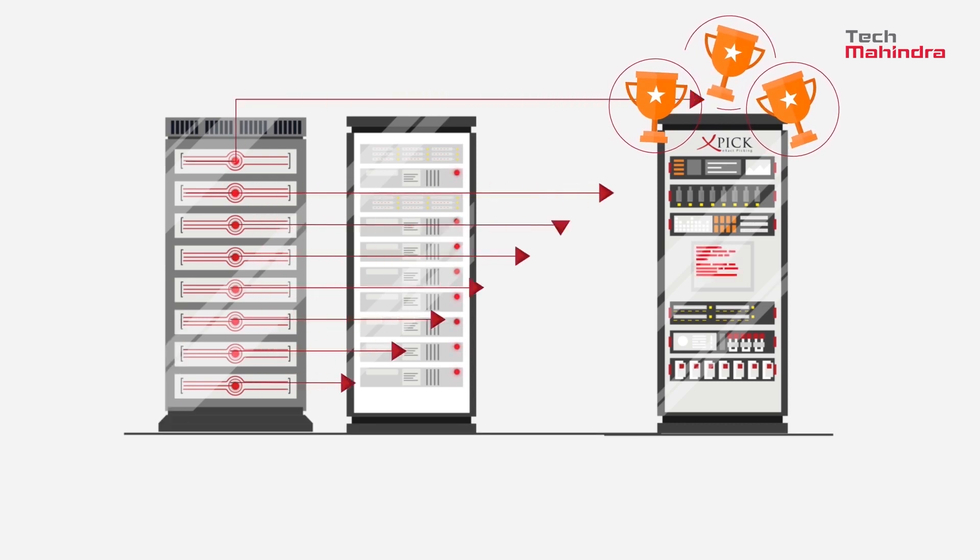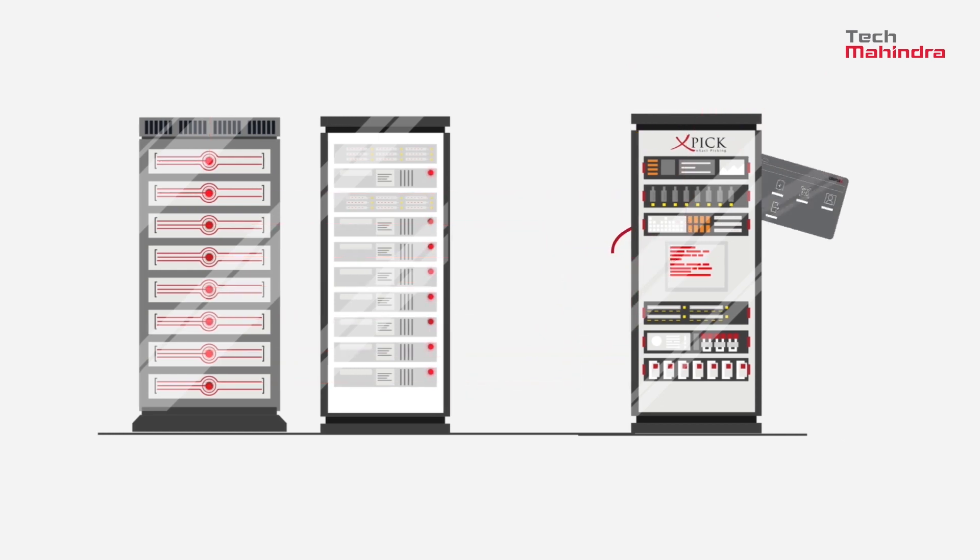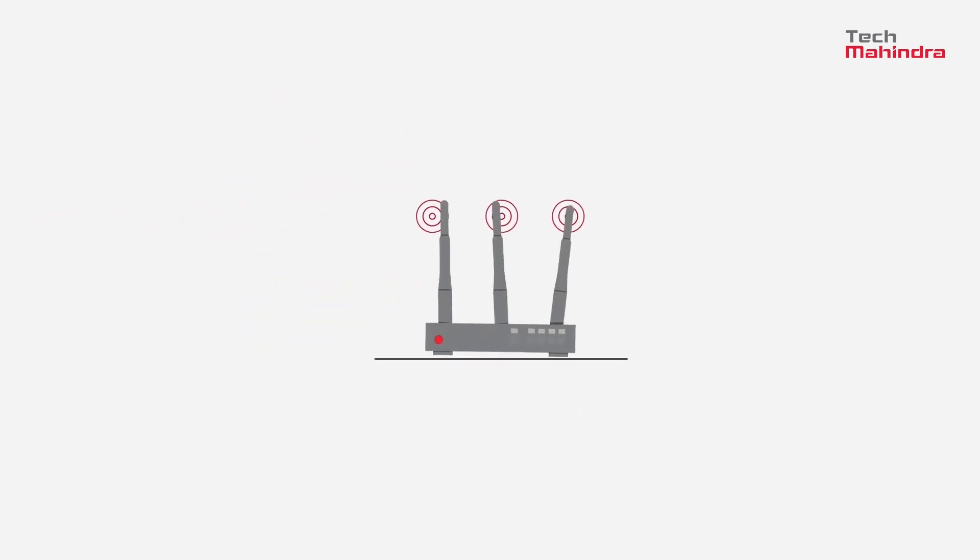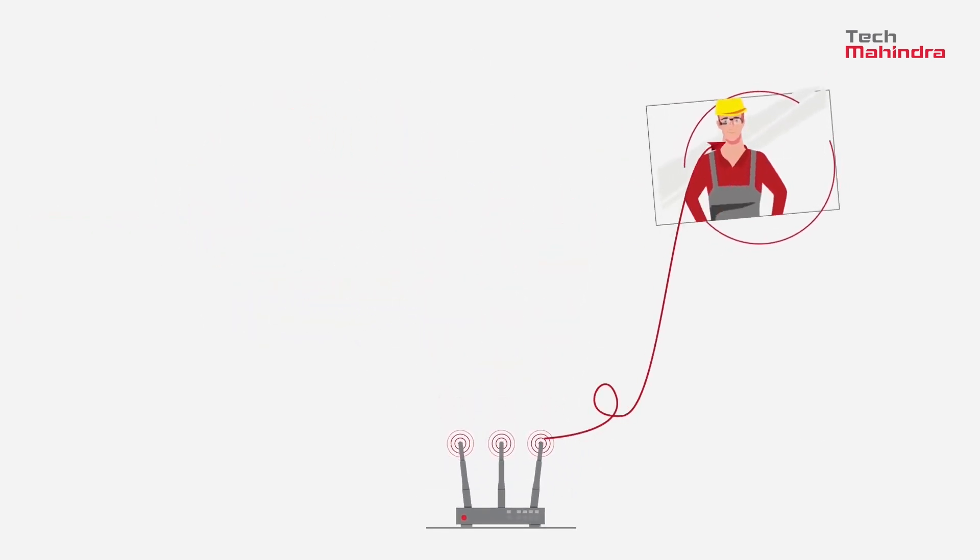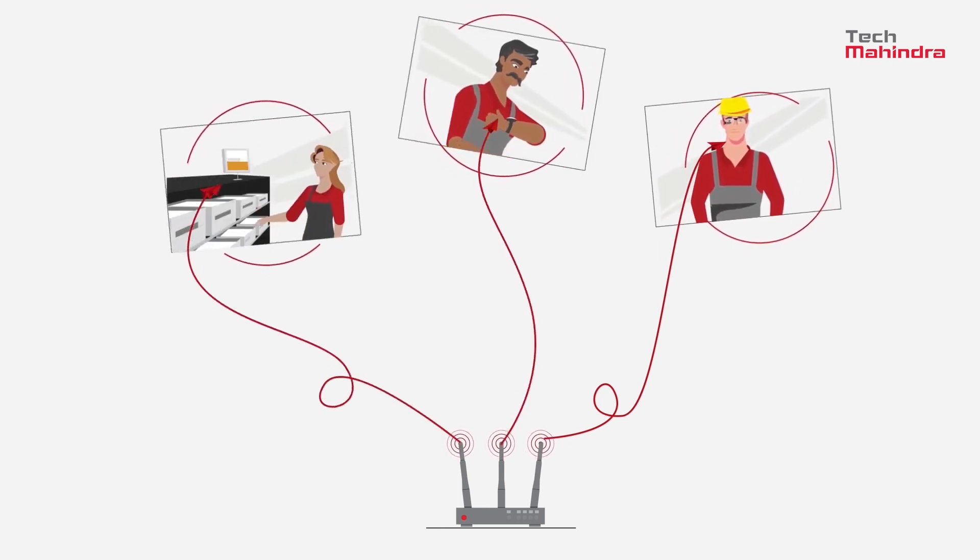Xpik pulls data out of the warehouse management system and displays it in a secure, optimized, step-by-step manner on Android and Windows smart glasses, smart watches, smart phones or tablets, just when the picker needs information.